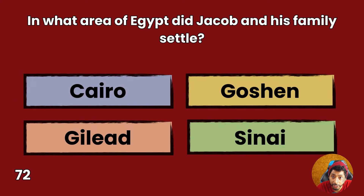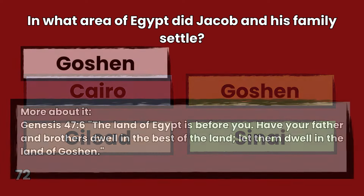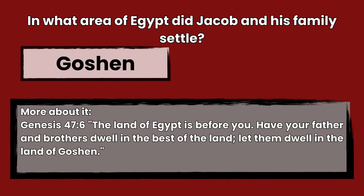Question 72: In what area of Egypt did Jacob and his family settle? Cairo, Goshen, Gilead, or Sinai? Answer: Goshen. Genesis 47:6 — The land of Egypt is before you. Have your father and brothers dwell in the best of the land. Let them dwell in the land of Goshen.